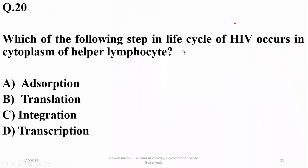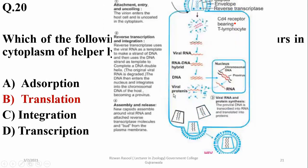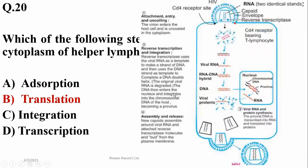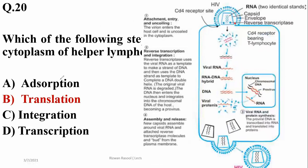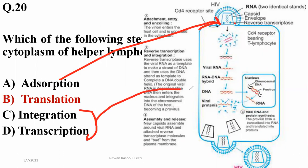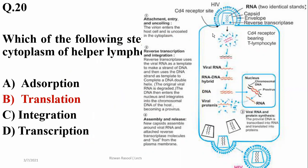Which step in the life cycle of HIV occurs in the cytoplasm of the helper T-lymphocyte? That is translation. Adsorption takes place at the cell membrane, while integration and transcription are events occurring within the nucleus. Translation takes place within the cytoplasm of the host cell.